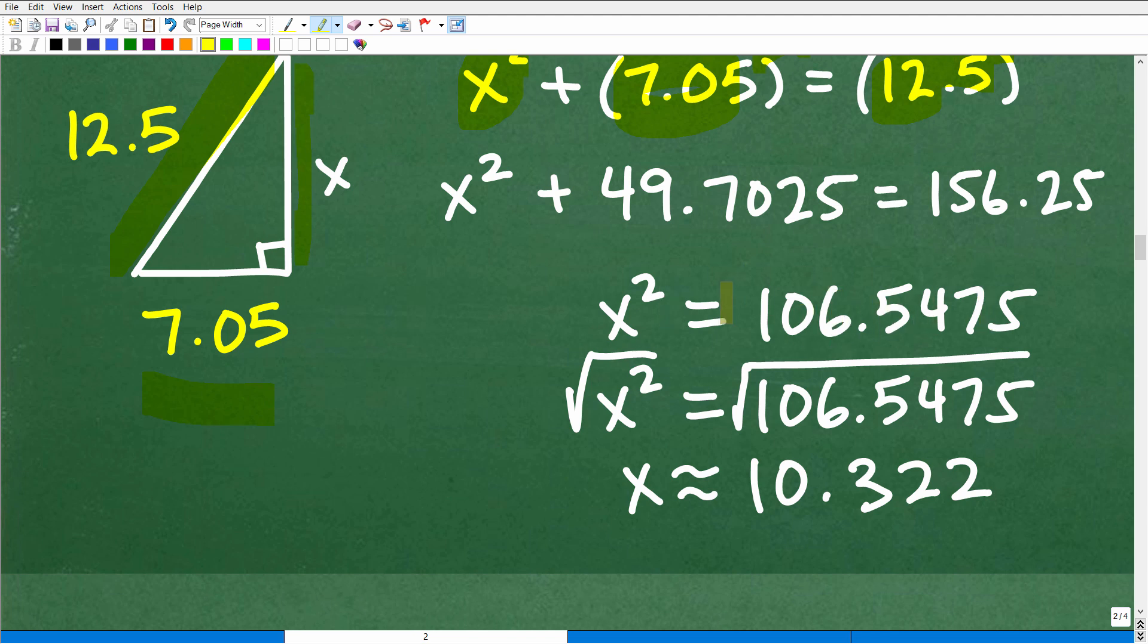Now, if you're rounding off during the course of this work, it'll affect your answer a bit. That's why I gave you the answer as 2.2. If you've got a little bit more refined answer, that's perfectly fine. But here we have X squared equals 106.5475. So we're going to take the square root of both sides, and that will give us X is approximately equal to 10.322. So that's that distance right there. Okay, so now let's go back to our figure.